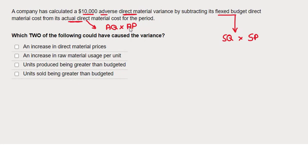If we're thinking about what variance this actually is, this is our total direct material variance. This includes both price and usage variances. Which two of the following factors could have caused us to have an adverse material variance?